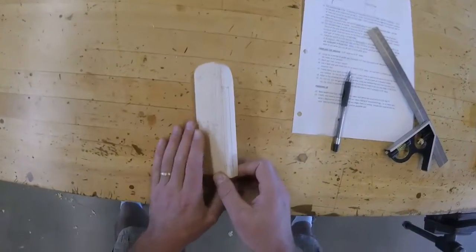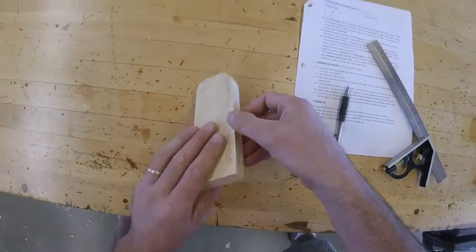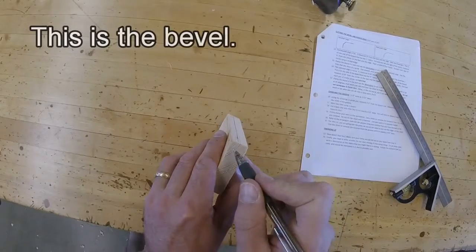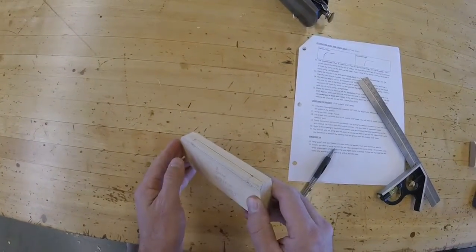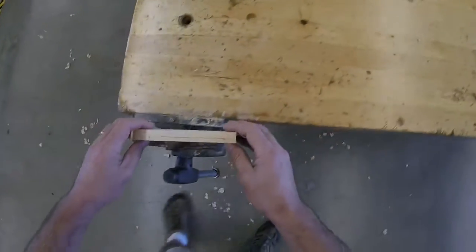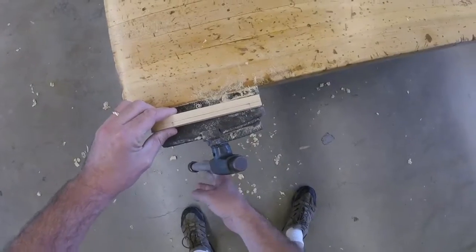So now you can see from the corner, I have the two lines, and what I'm going to do is I'm going to cut that to make a beveled edge right there. And I'll use my block plane to do that. Put that into the bench vise. Tighten that down.